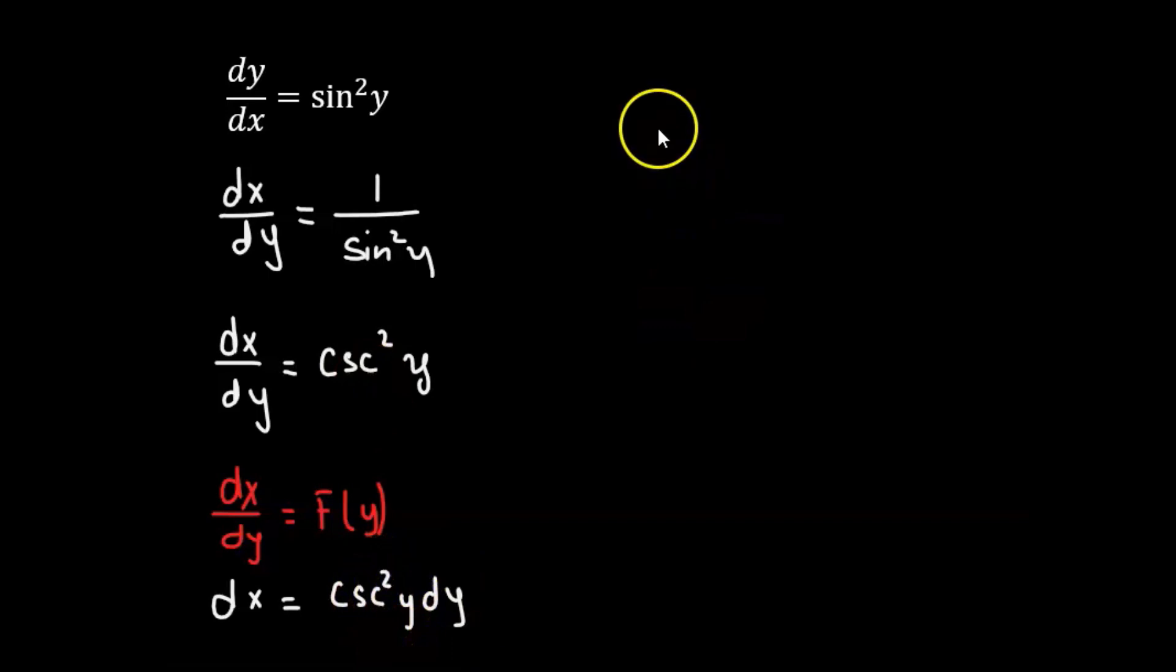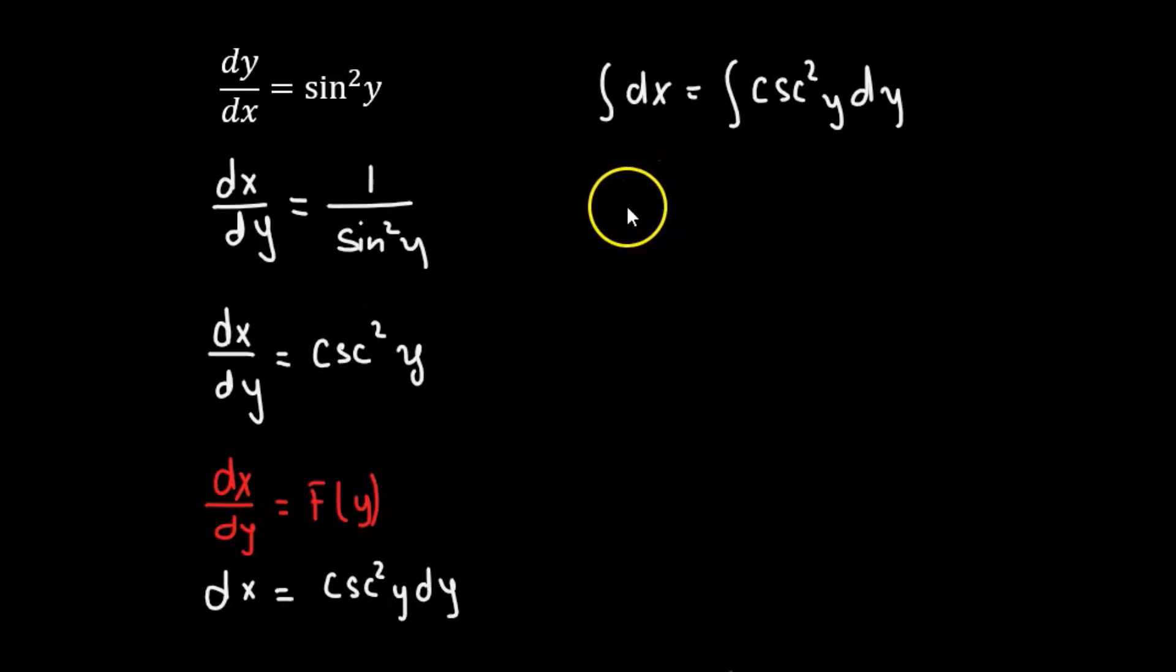So let's integrate both sides. We have integration dx equals integration cosecant squared y dy. The integration of dx will be x, which